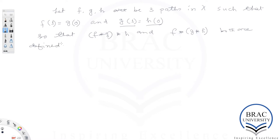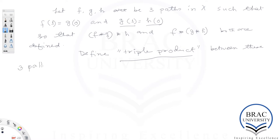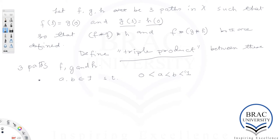We now need the definition of the triple product between these three paths f, g and h. For this, choose two points a, b in I such that 0 < a < b < 1.